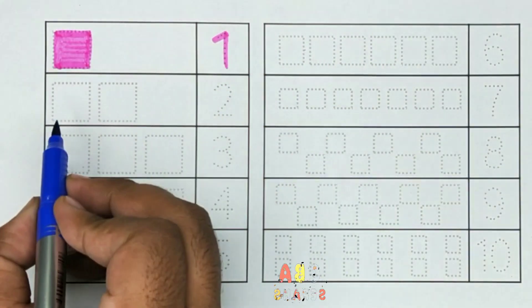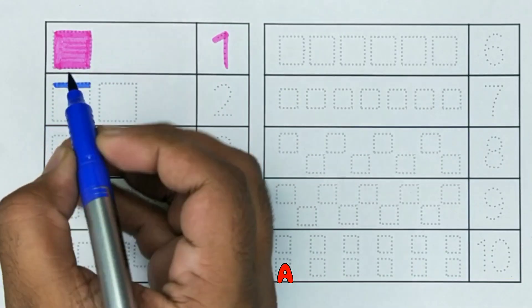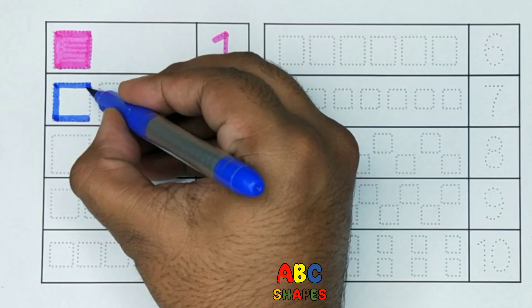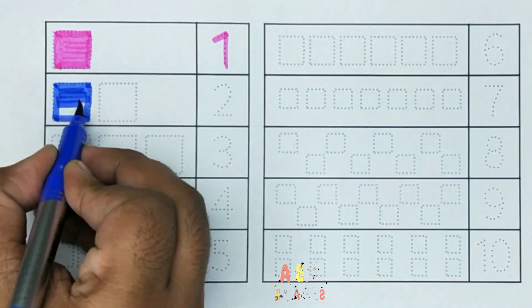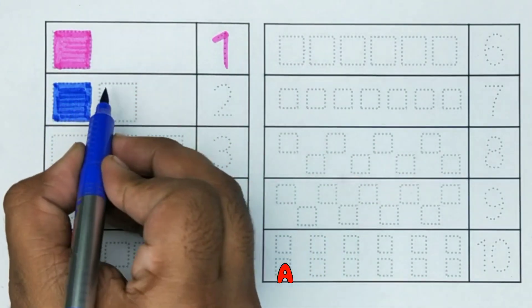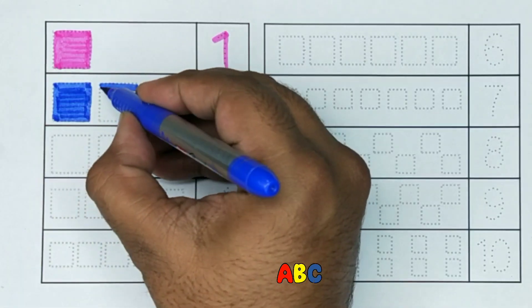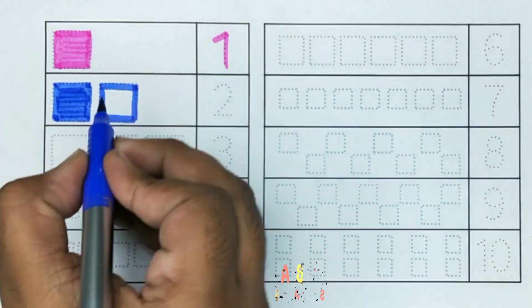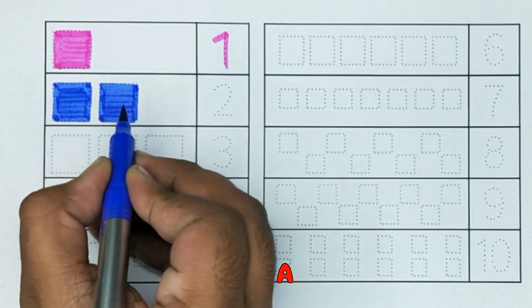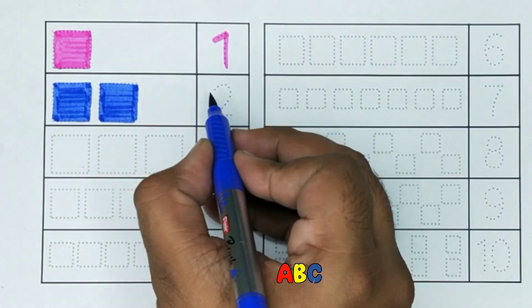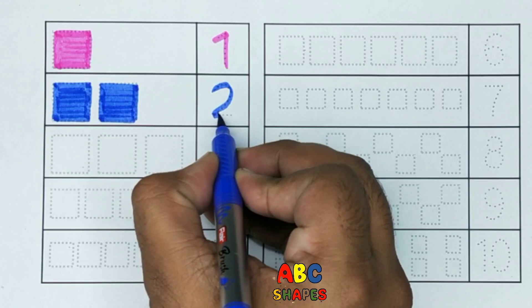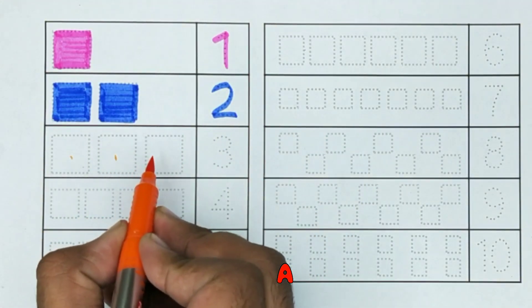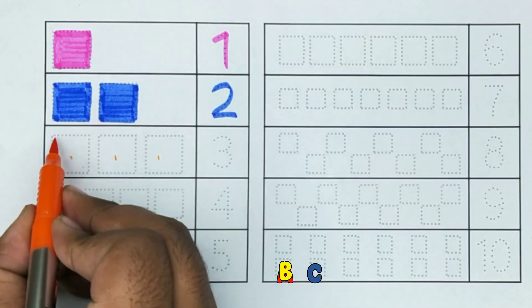Now we have 1. 2 squares. 1, 2. Now we have 1, 2, 3 — 3 squares.